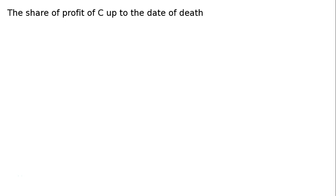The question is: A, B and C were partners sharing profits and losses in the ratio of 2:2:1. C died on 30th June. Profit and sales for the year ended 31st March were 1 lakh and rupees 10 lakh respectively. Sales during April to June were 1 lakh 50,000. You are required to calculate the profit of C up to the date of his death.